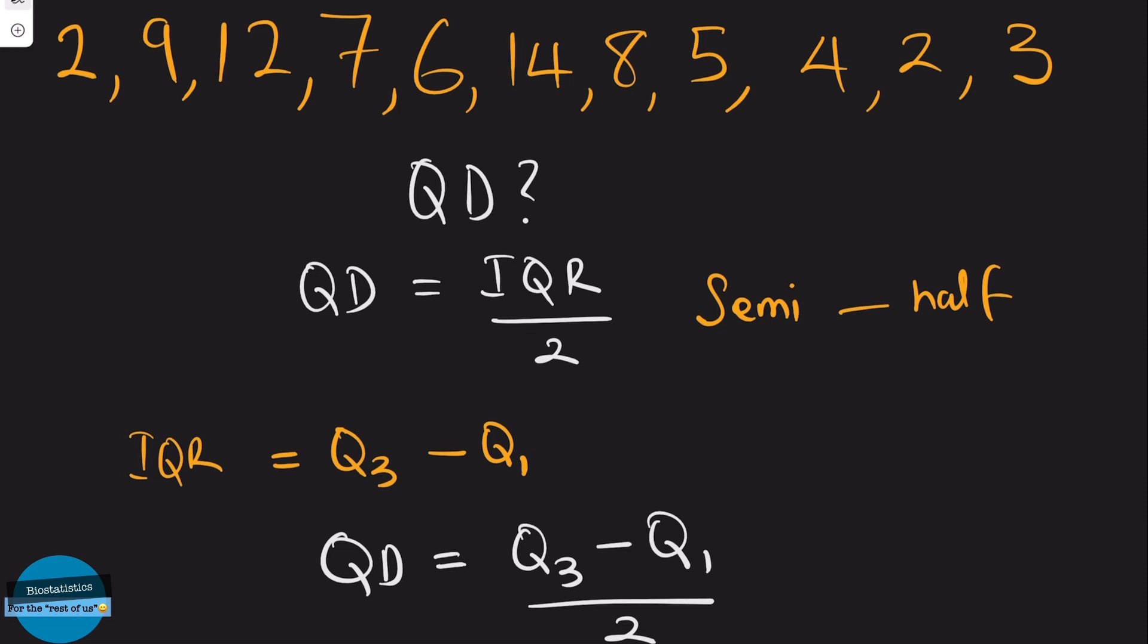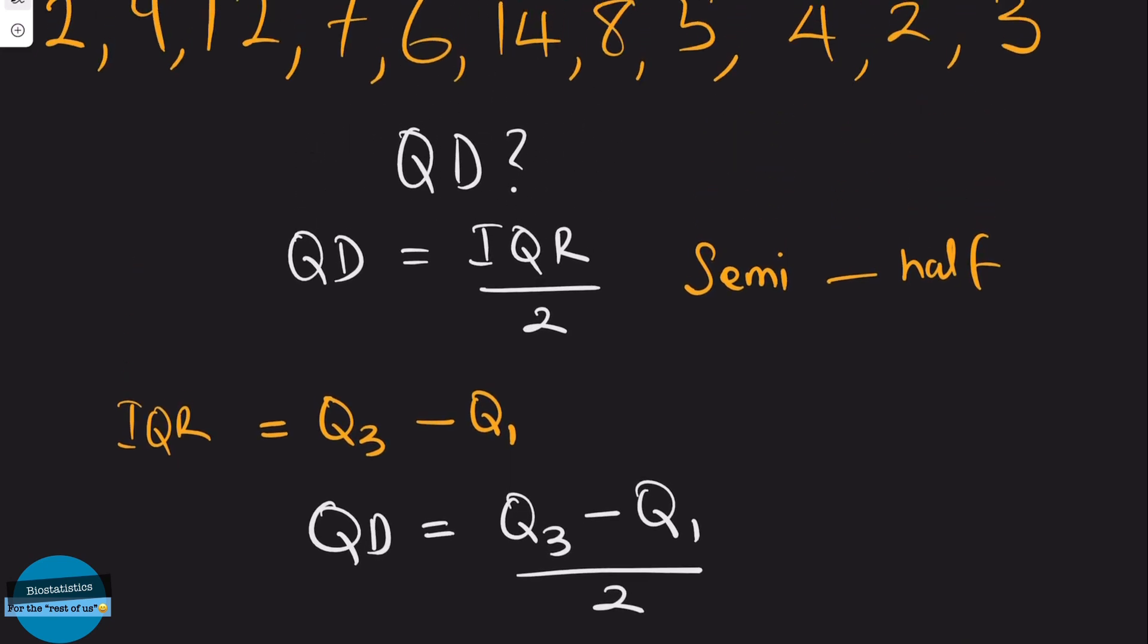To do this, we will need to first compute the quartiles, then find the interquartile range before we can now divide by 2 to get the semi-interquartile deviation. So we will need to follow just 4 simple steps.